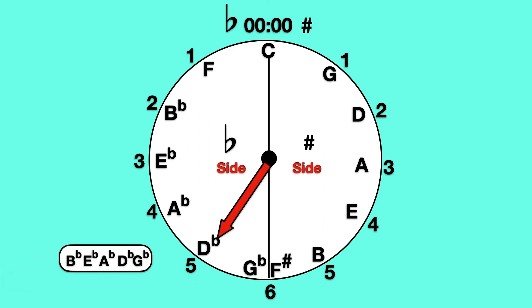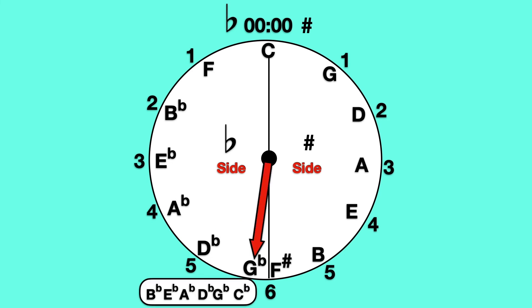D flat major has five flats: B flat, E flat, A flat, D flat, and G flat. G flat major has six flats: B flat, E flat, A flat, D flat, G flat, and C flat.